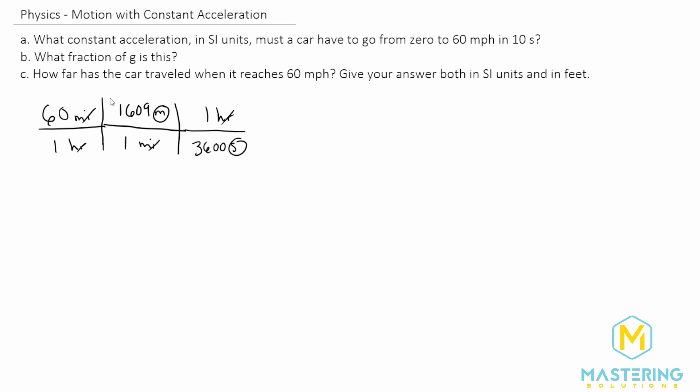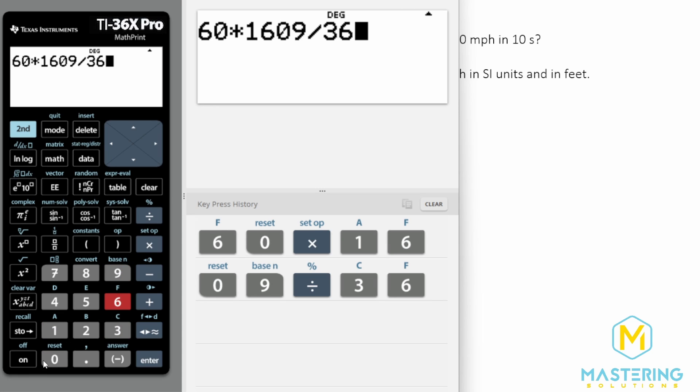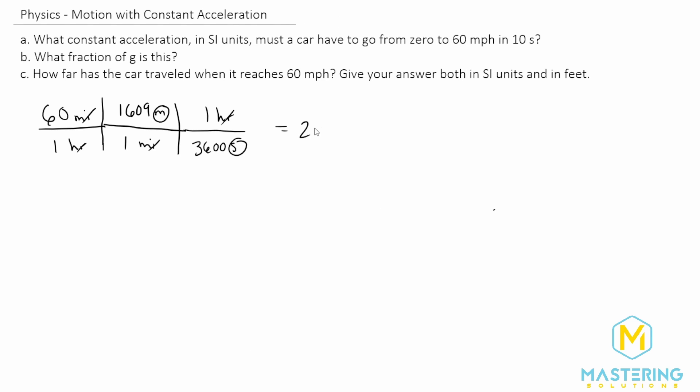So now we'll multiply 60—if it's on the top we multiply it, if it's on the bottom we divide by it. So 60 times 1609 divided by 3600. So 60 multiplied by 1609 divided by 3600 gives us 26.82 meters per second.